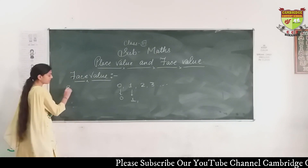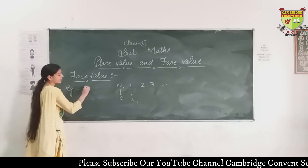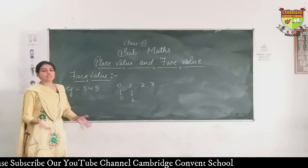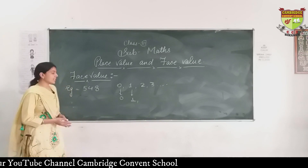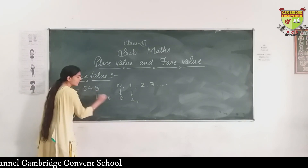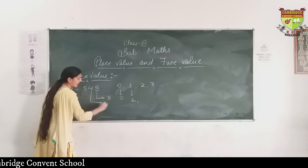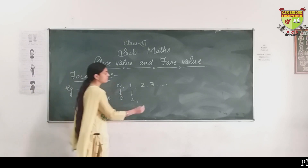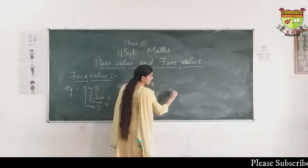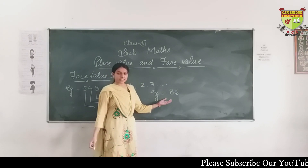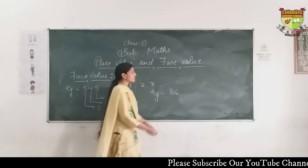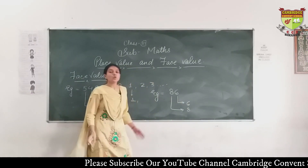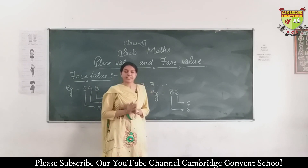Let us see an example. Take the number 548. Find out the face value of all the digits. As we know, the face value of a digit is the digit itself. So the face value of 8 is 8, 4 is 4, and 5 is 5. It never changes. See another example: 86. The face value of 6 is 6 and 8 is 8. Face value of a digit is the digit itself — it never changes.